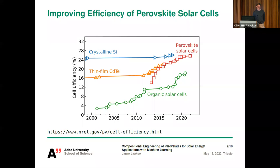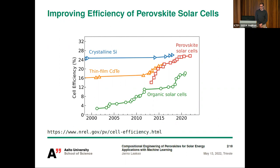In this figure you can see the efficiencies of different solar cell technologies and how they have changed during the past 20 years. On the top you can see the traditional silicon solar cells and how their efficiency has stagnated around 25 percent. In red we have the perovskite solar cells, and their efficiency has improved significantly during the past 10 years.